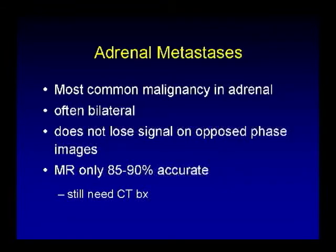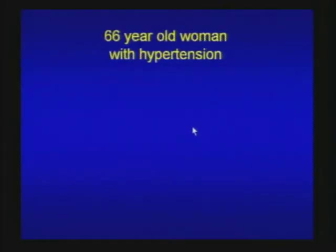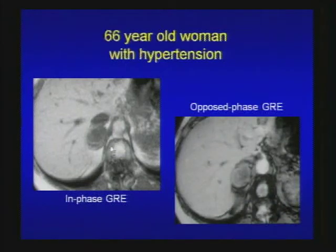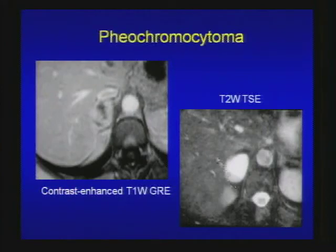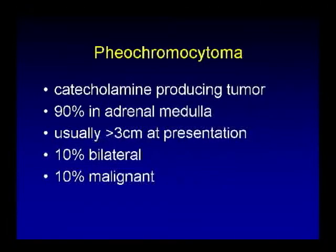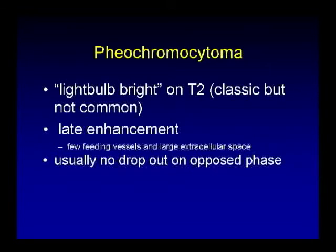Here's our next case: 66-year-old woman with hypertension. T1 in and opposed-phase image shows a right adrenal gland mass with no signal dropout compared to skeletal muscle — not typical for adrenal adenoma. Contrast-enhanced image shows heterogeneous enhancement and it's very bright on T2-weighted image — in fact light bulb bright — typical for pheochromocytoma. Pheochromocytoma is a catecholamine-producing tumor, 90% in the medulla, usually greater than 3 cm at presentation. Remember: 10% can be bilateral, 10% malignant. Light bulb bright on T2 is classic but unfortunately not very common. They demonstrate late enhancement due to large extracellular space and usually no dropout on opposed-phase imaging compared to adenoma.